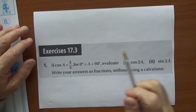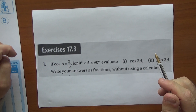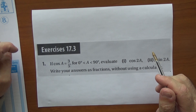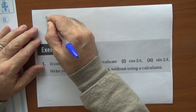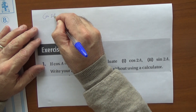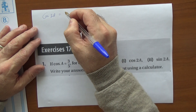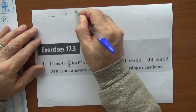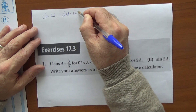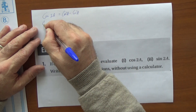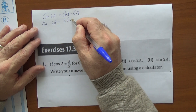Welcome back. We're doing exercise 17.3, and these relate to the double angle formulas. The double angle formulas are: cos(2a) = cos²(a) - sin²(a), and sin(2a) = 2·sin(a)·cos(a).